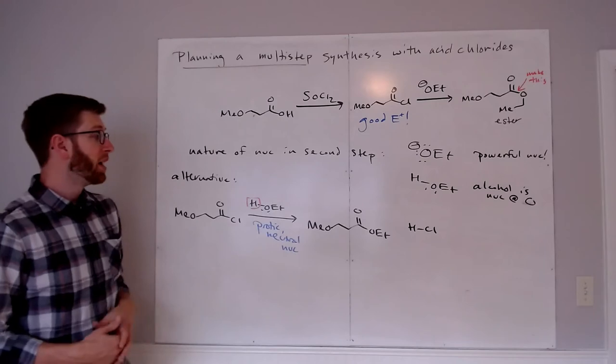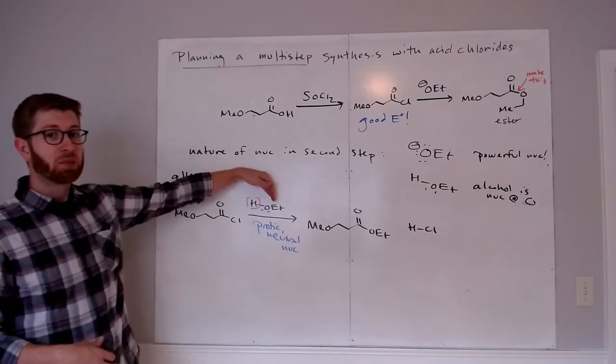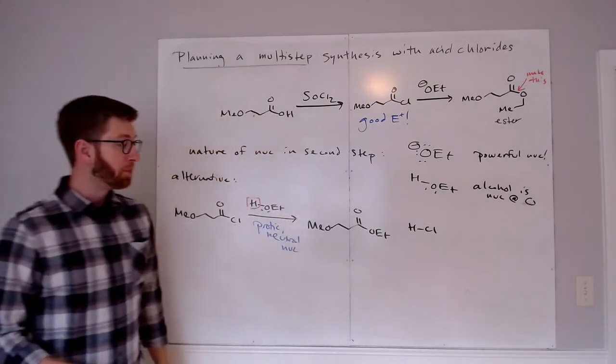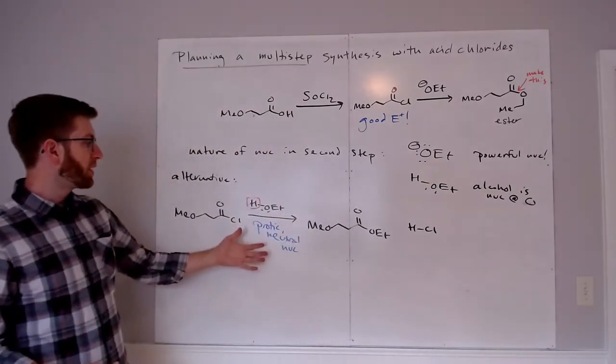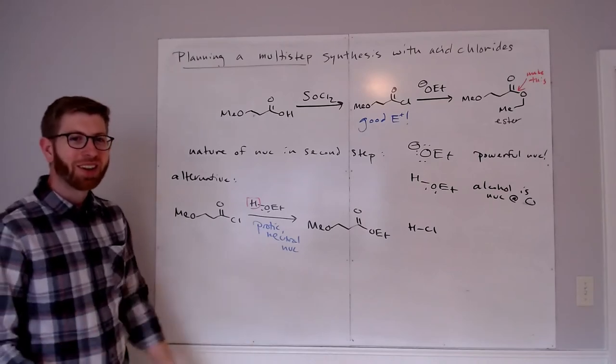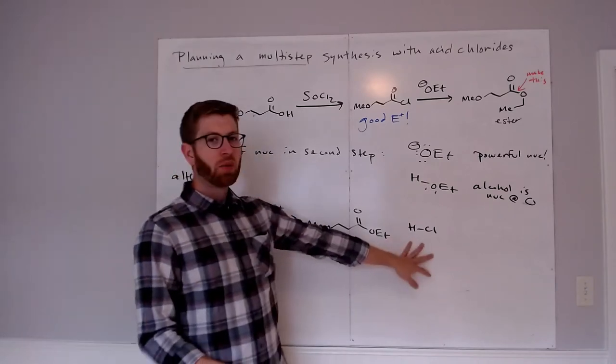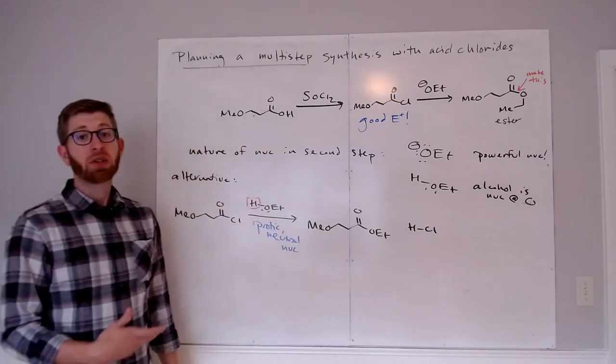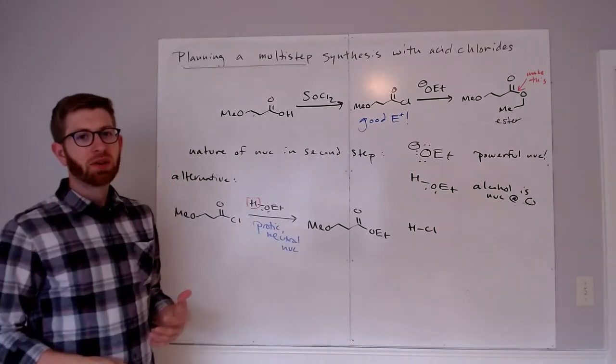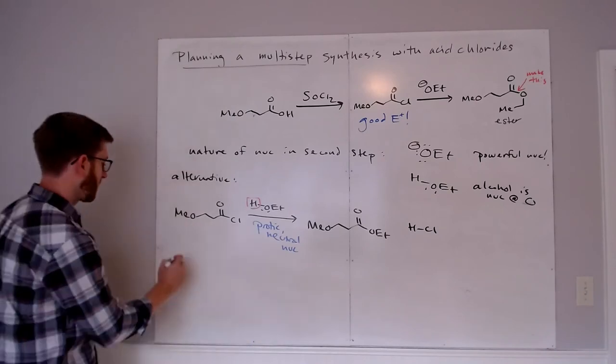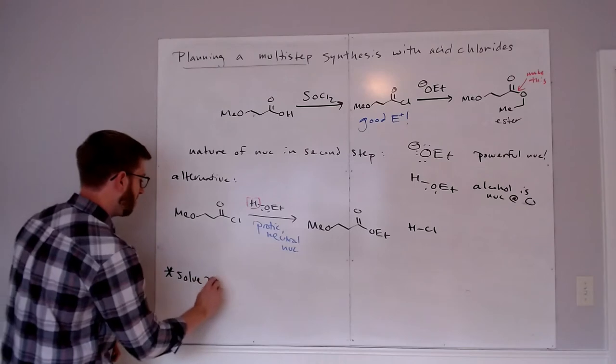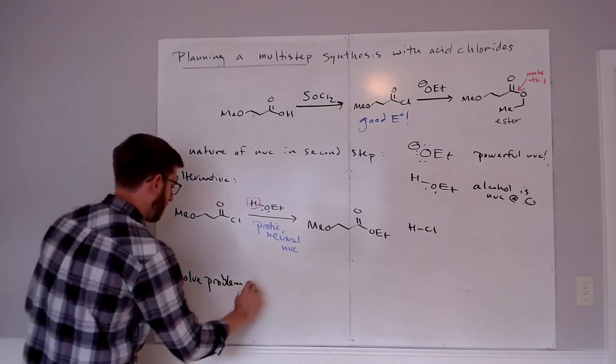It also could be the case that you've got other functional groups in the molecule that you're reacting either in the product or in the reactants themselves that react with HCl, which could also be an issue. So we have, on the one hand, an easier to access less expensive nucleophile, something like ethanol rather than OEt-. But on the other hand, if we use this polar protic neutral nucleophile, we end up creating byproducts that are hazardous to us or potentially the compounds that we're working with.